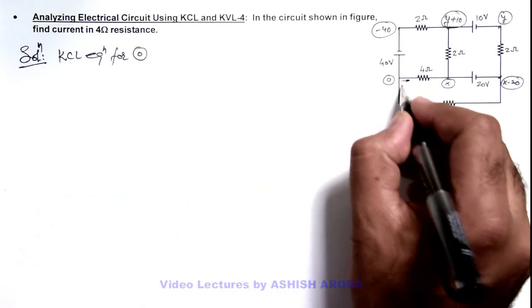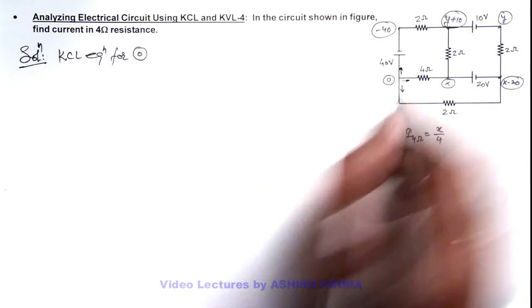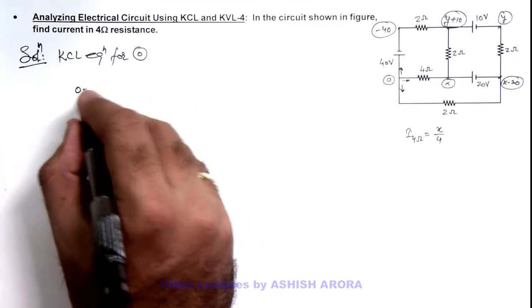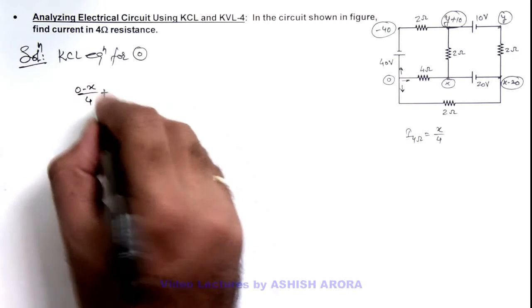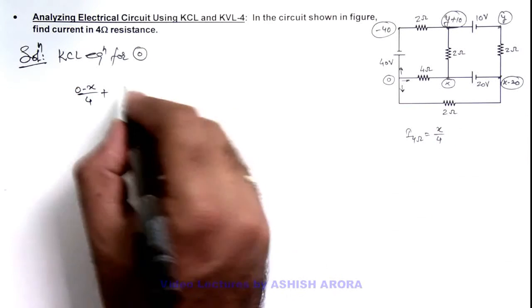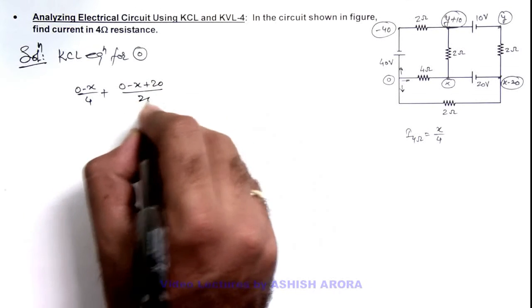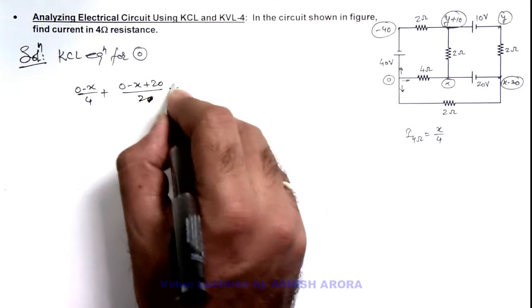And if I take the sum of outgoing currents from this as zero, then here it can be written as zero minus x by 4, plus current going in this direction is zero minus x plus 20 divided by 2.